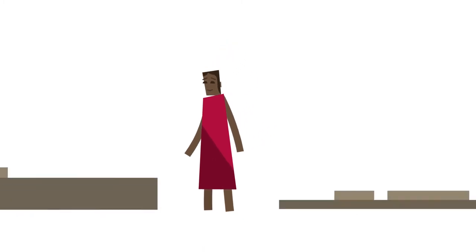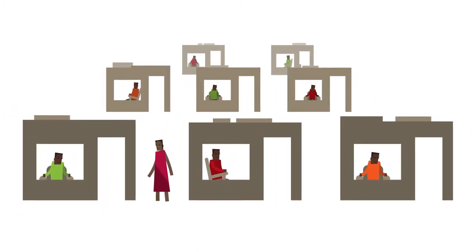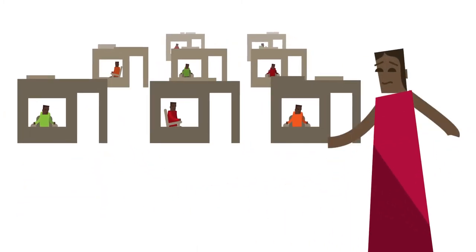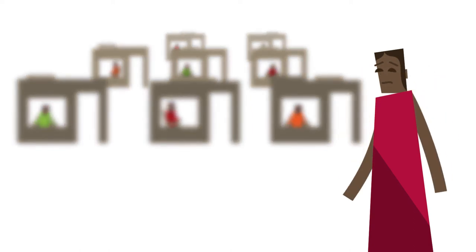This is Parvathy. She visits eight housebound older people every week, but she's slowly losing her sight and is worried about how they will cope without her.